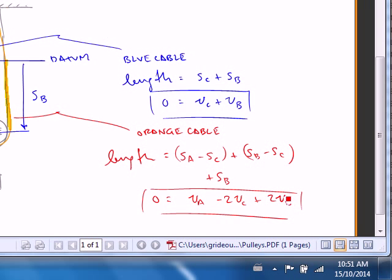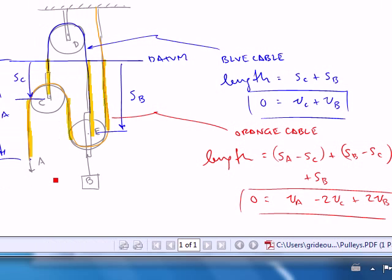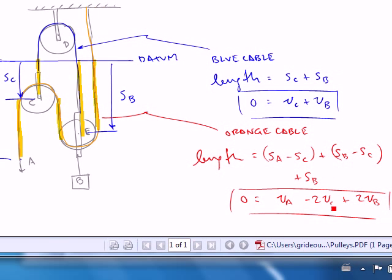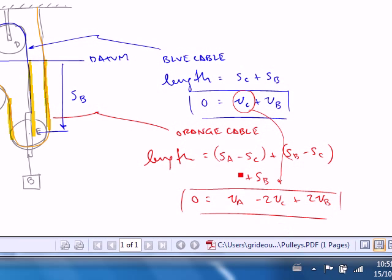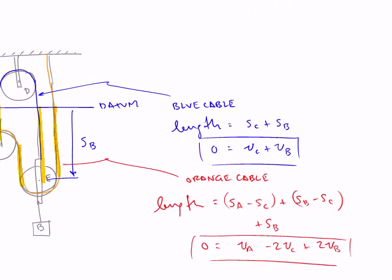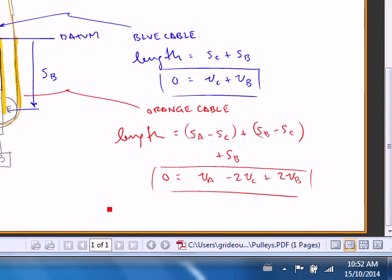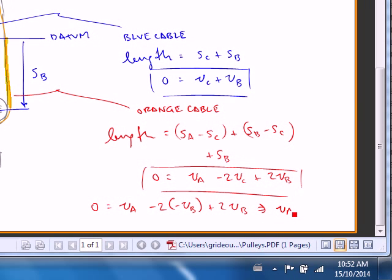We're trying to relate the motion of A and B. So I need to eliminate VC here. And I can do that by making a substitution. So I'll go down here and I'll say zero is equal to VA minus 2, VC is minus VB. And then I've got two more VB's. And I end up with velocity of A is equal to minus 4 VB.